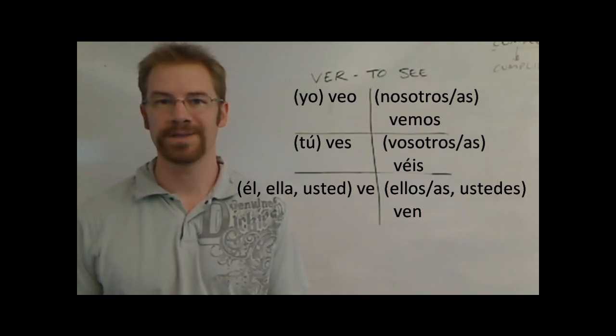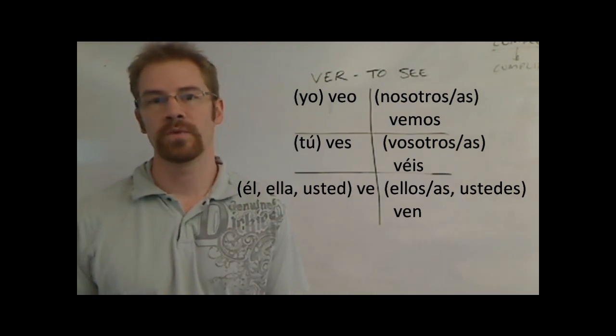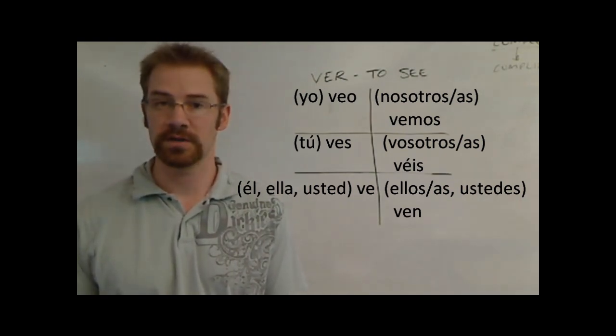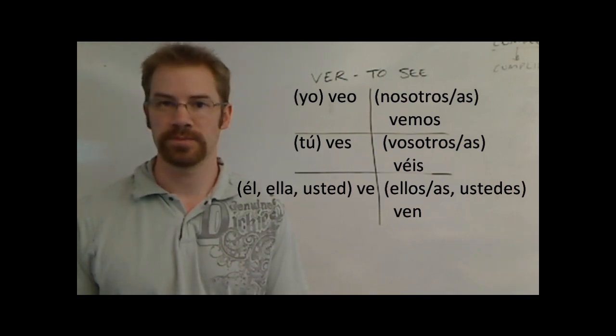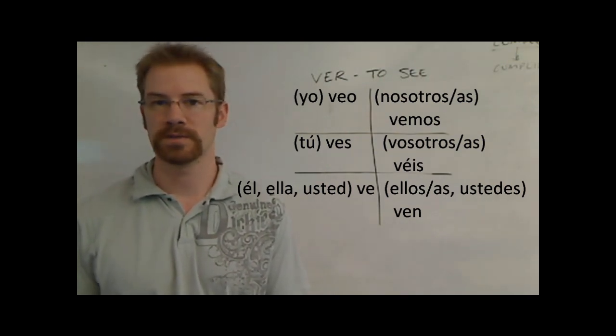So you'll notice that the yo form is veo. It keeps the e in there. Otherwise, the verb ver, that's the er verb, it follows a regular er verb pattern with the exception of the yo form. So that's not too bad.